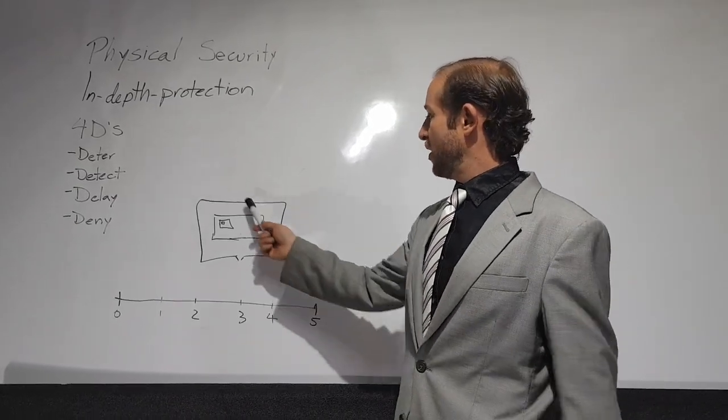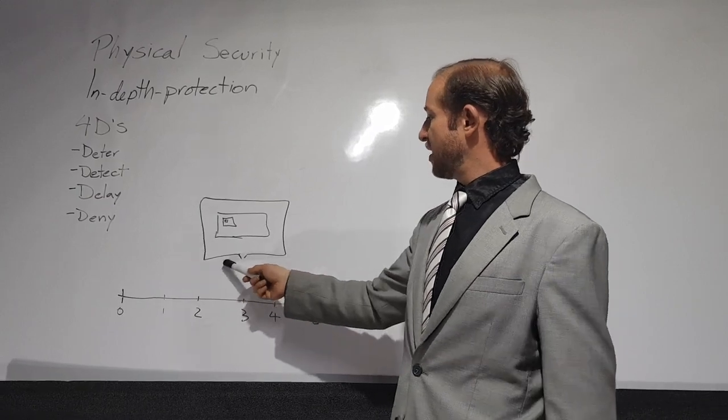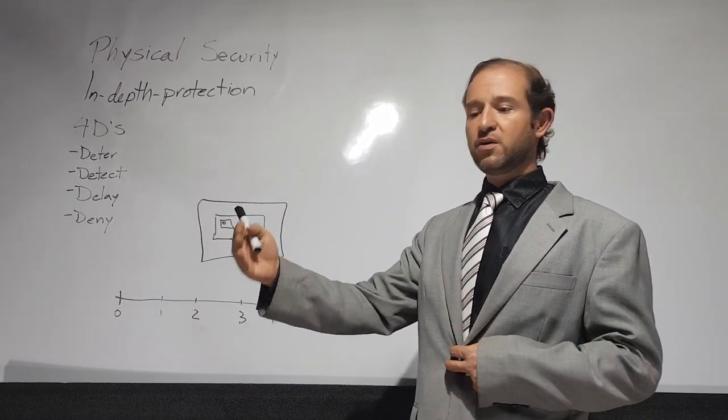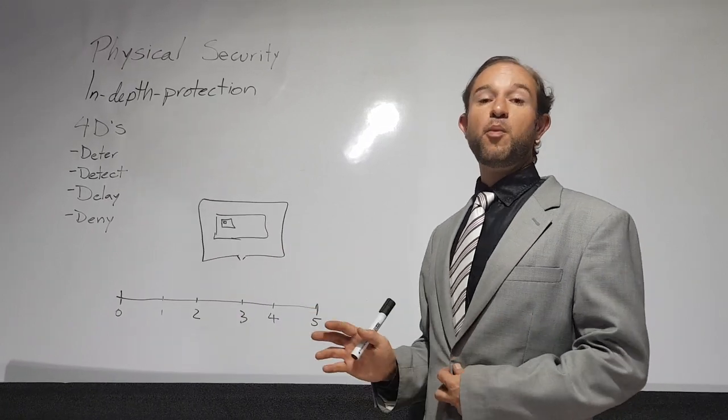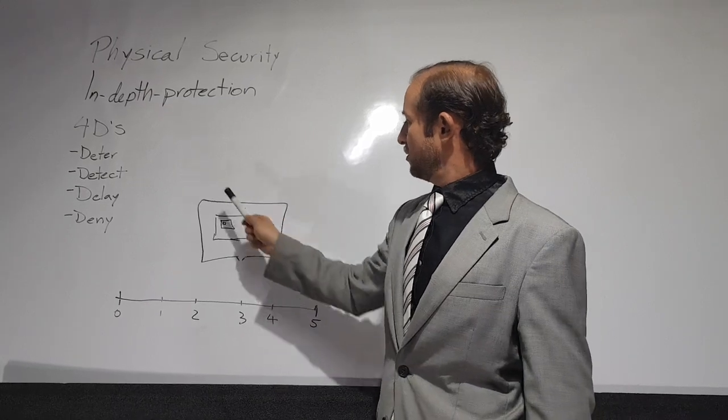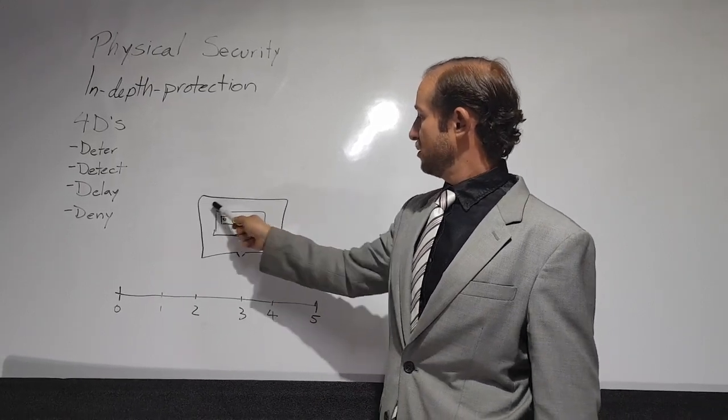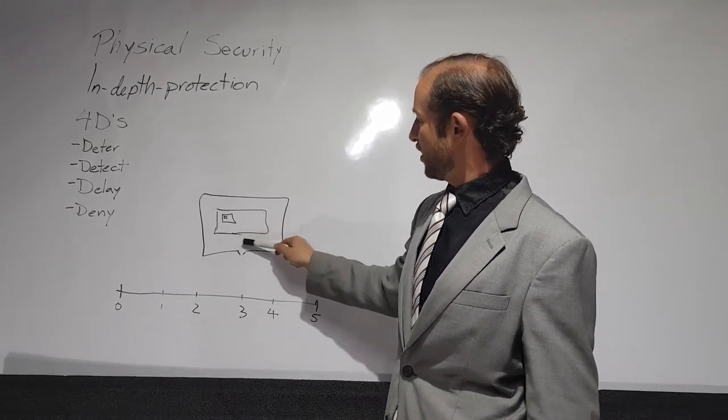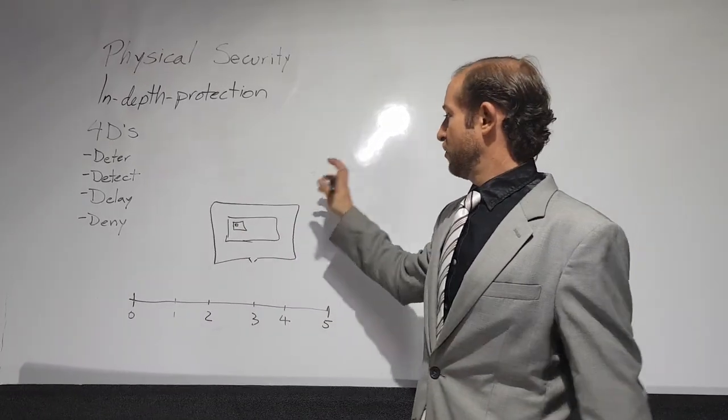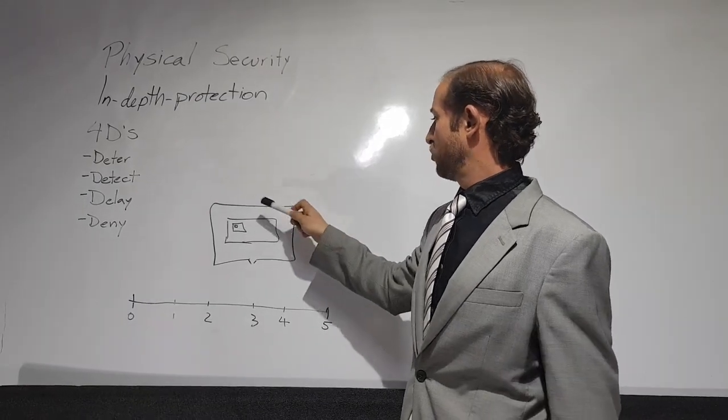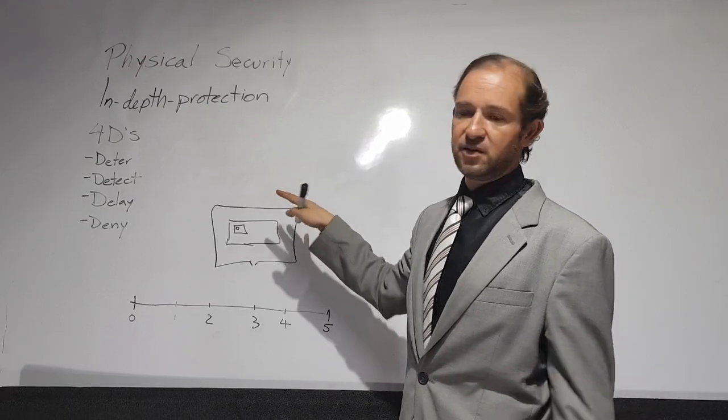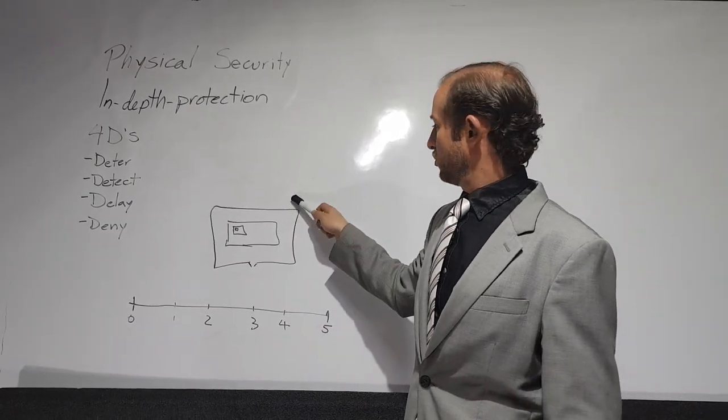When I have a facility, usually I have a perimeter like the outer line of property. And then after that, I have a building. In this area, this is called the clear area. It's used to have surveillance cameras and CCTVs and sensors to detect intruders before they get to the building.